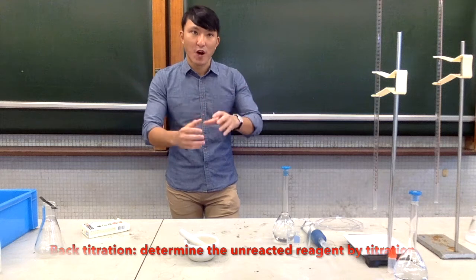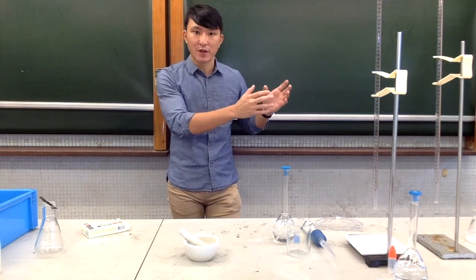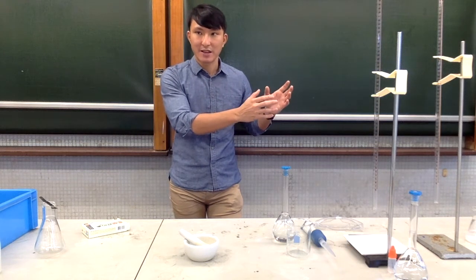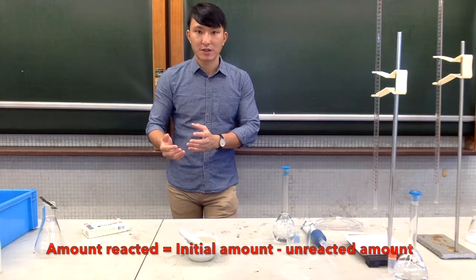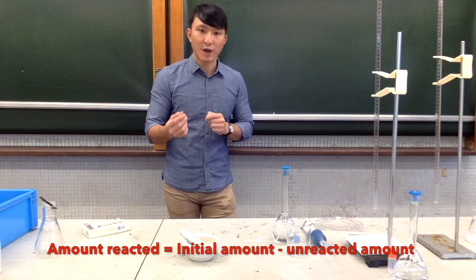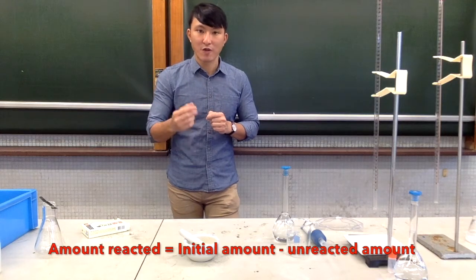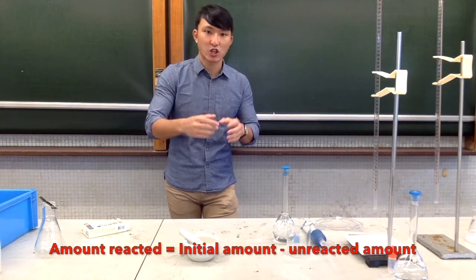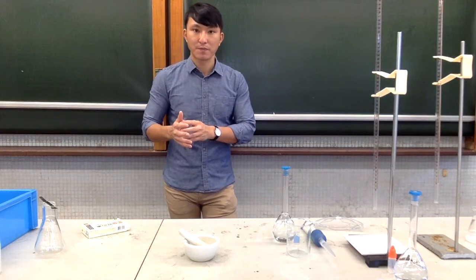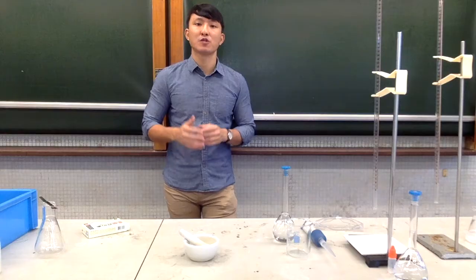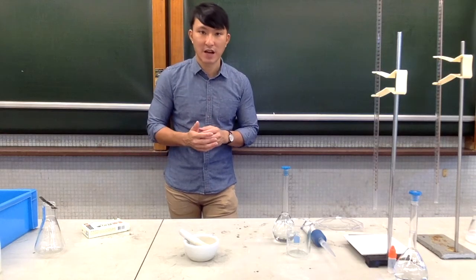So from the initial amount of excess reagent that we have added minus the amount of unreacted reagent left, we are able to find out the amount of reagent that has actually reacted with our target sample. And from there, we are able to find out the quantity of our target sample.